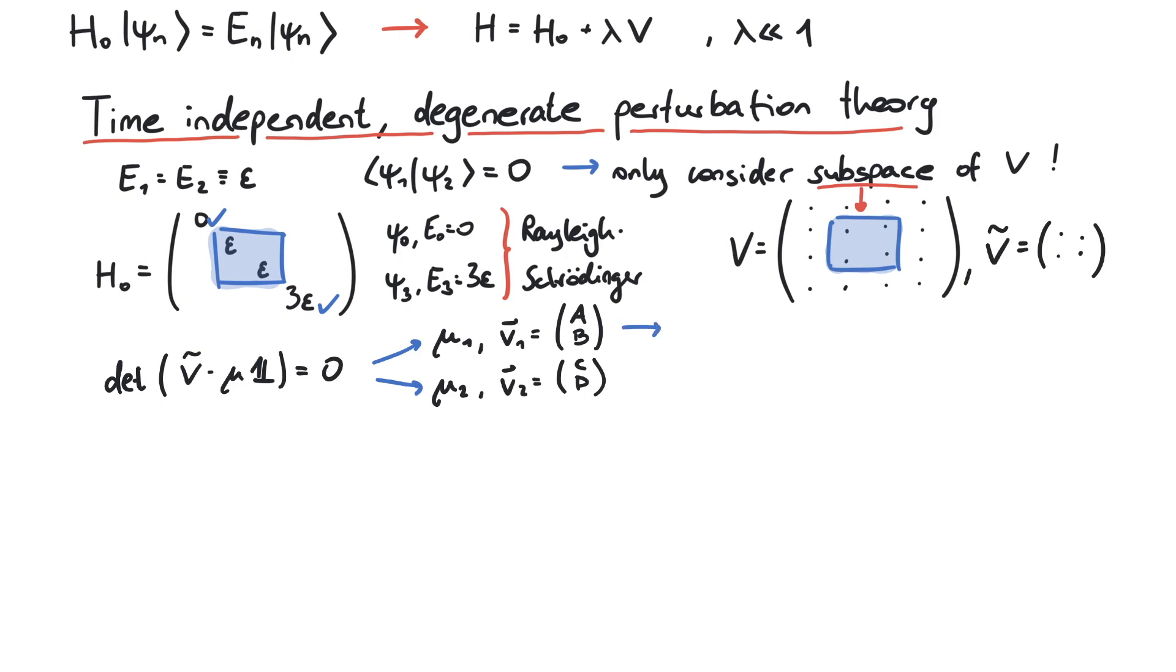If the first eigenvector is ab, then the new eigenfunction, let's call it psi1, is given by a times psi1 plus b times psi2. And its energy? The corresponding eigenvalue of the 2x2 potential is the first order correction to epsilon.